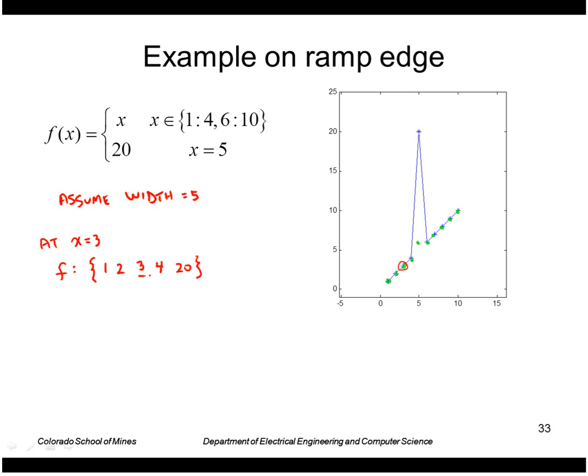At x equals 4, the values within the neighborhood are 2, 3, 4, 20, and 6. I sort those to get 2, 3, 4, 6, and 20. The median is the middle one, so g of 4 is 4.